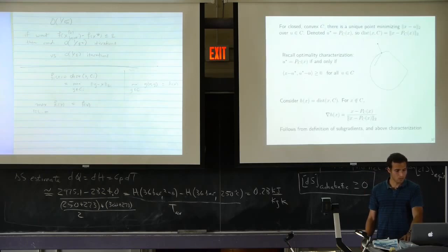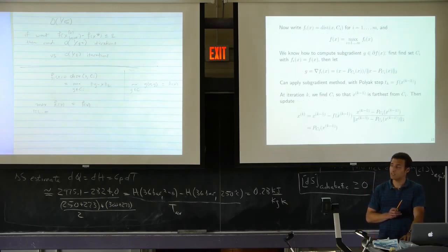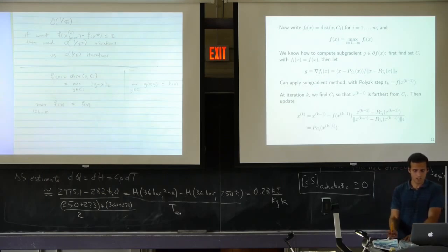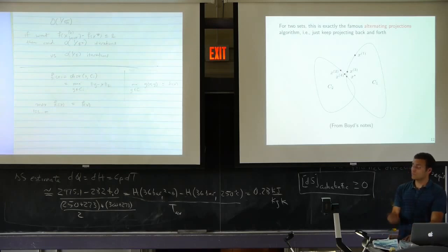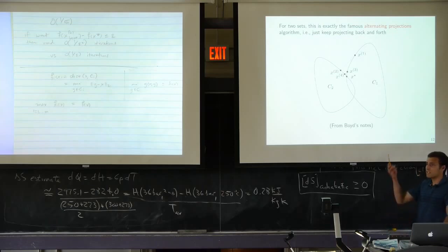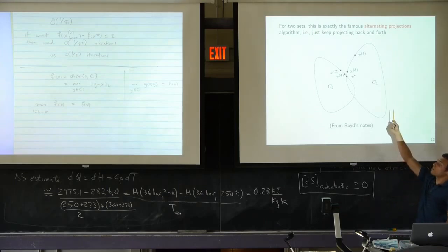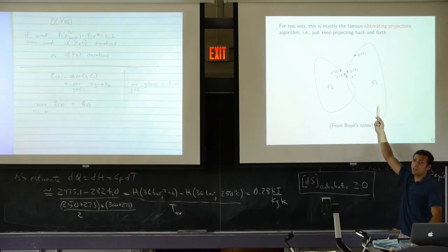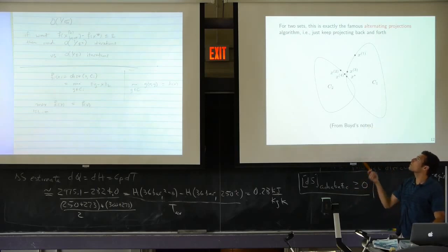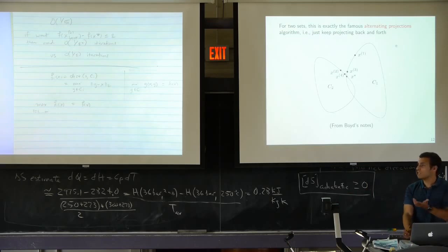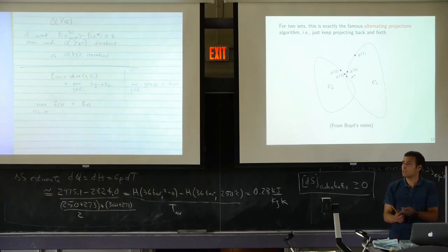If we can compute subgradients of this function, we can apply the subgradient method and find an x* in the intersection of all sets. We used Polyak step sizes for this. For two sets, the algorithm reduces to alternating projections: project onto one set, then the other, and repeat. That's a famous algorithm, and by deriving it through subgradient method, we automatically know it converges and at what rate.